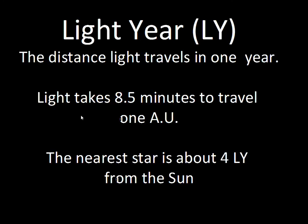To get a sense of this distance: across our one astronomical unit, when we receive sunlight on Earth, that light left the Sun 8.5 minutes previously. Light does not travel infinitely fast, but it is very fast compared to cars or planes. Light takes 8.5 minutes to travel one astronomical unit. With the light year as our ruler, our nearest star is four light years away. That star is in the Southern Hemisphere, not visible from Nebraska. The light reaching Earth tonight from that star left about four years ago.